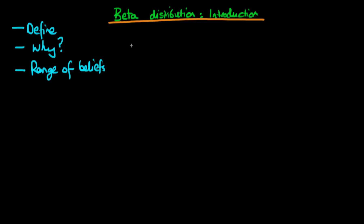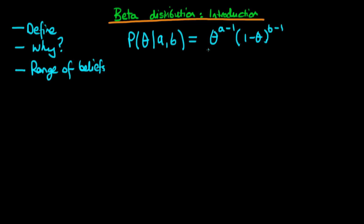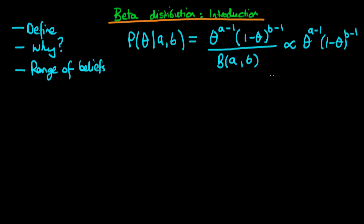Starting off by defining what the beta distribution is: it's a distribution defined in terms of a variable theta. It's a continuous distribution, which is a function of two parameters, a and b, and it's of the form theta to the power a minus 1, times 1 minus theta to the power b minus 1, all divided through by a normalization constant — the beta function of a and b. The denominator is not a function of theta; it's a normalization constant which ensures the probability distribution integrates to 1. So we can think of this distribution as being proportional to theta to the power a minus 1 times 1 minus theta to the power b minus 1.